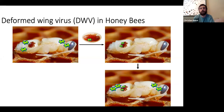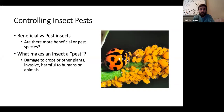In previous lectures, we learned the differences between beneficial and pest insects. Do you think there are more beneficial or pest species? Only about one percent of insects are considered pests. What makes an insect a pest? They can be damaging to crops such as stink bugs, invasive such as the emerald ash borer, or harmful to humans or other animals such as mosquitoes.